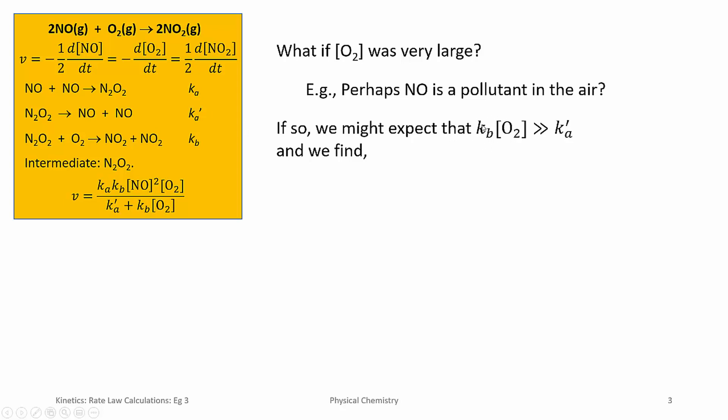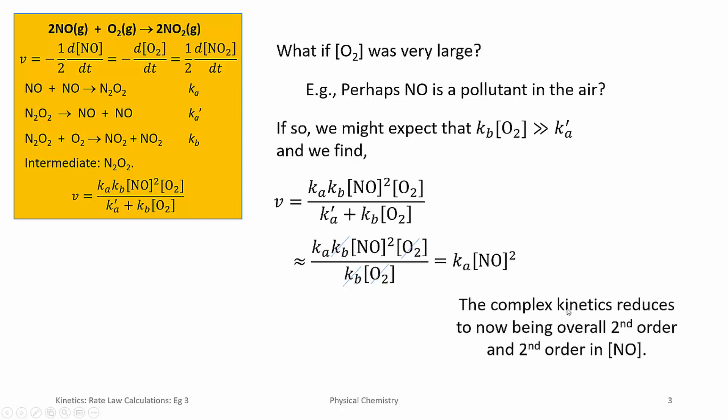This term here could very well be very much greater than this particular term here. Now, if that's true, then this term will be tiny in comparison to that, and so we can approximate this rate law now to this expression. We find there's some cancellation going on, and the rate law reduces to this, which is the more usual type of rate law. It's overall second order and second order in nitrogen monoxide. So the complex kinetics now reduces to this expression.